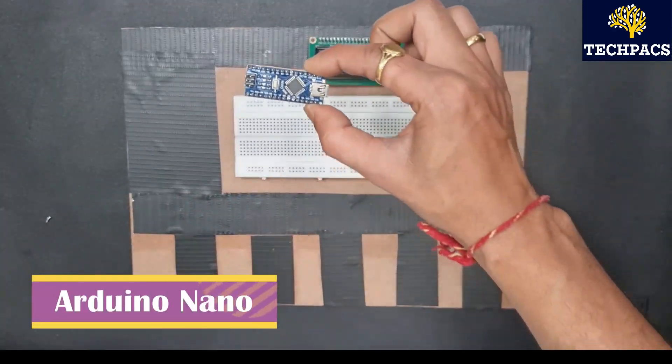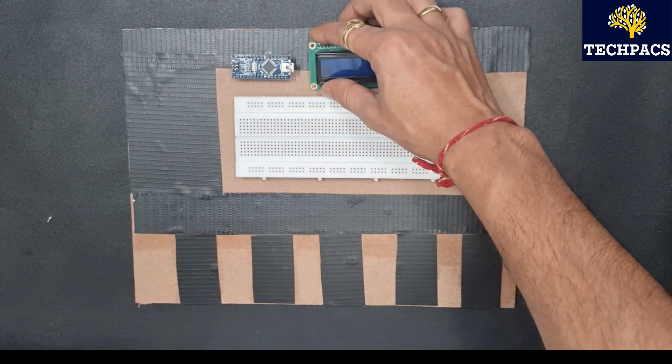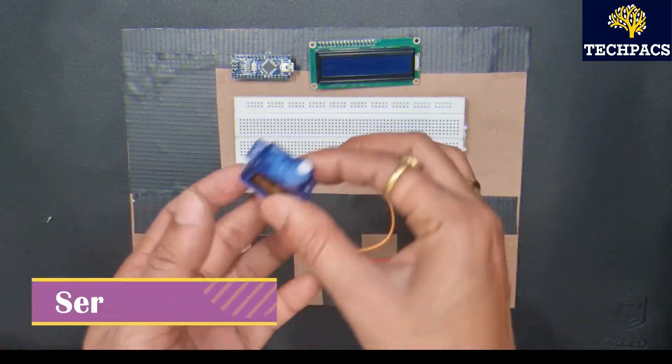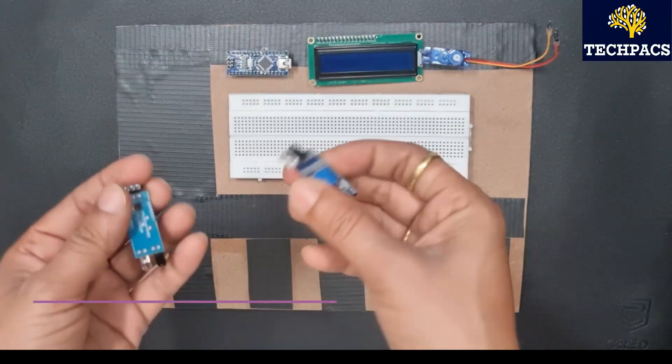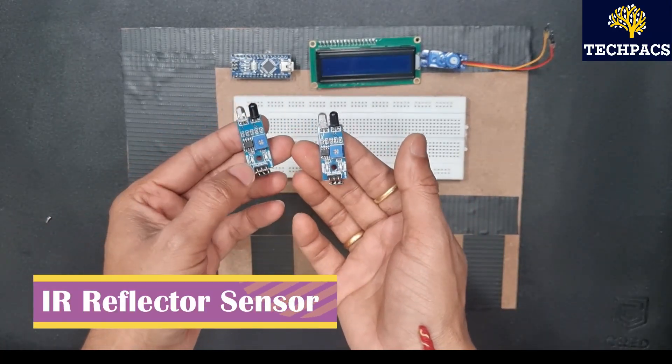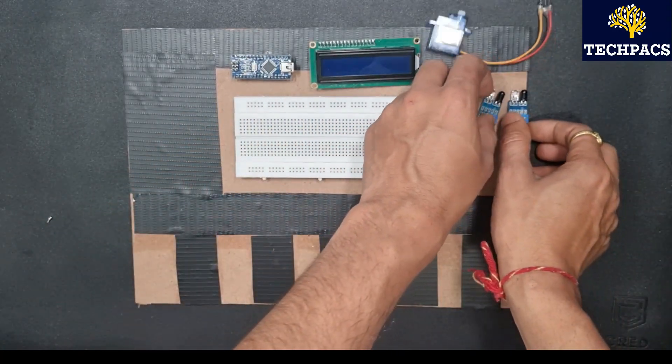Next we have an Arduino Nano as a microcontroller for instructing the components. Here is a servo motor for controlling the movement of the barrier. Next we have reflector sensors for detecting the presence of cars in the slots.